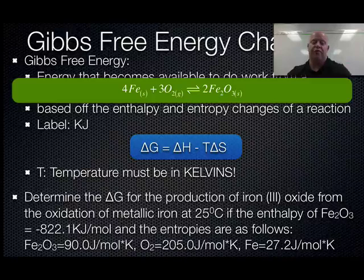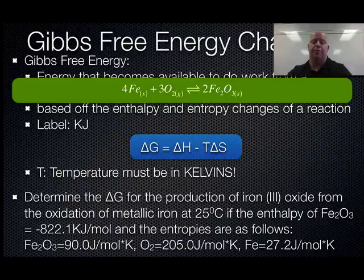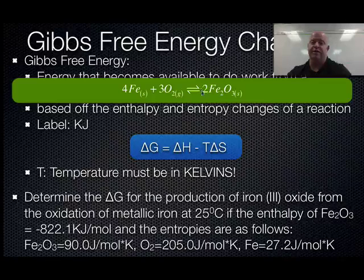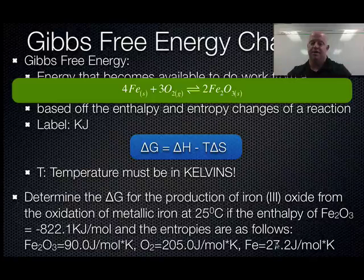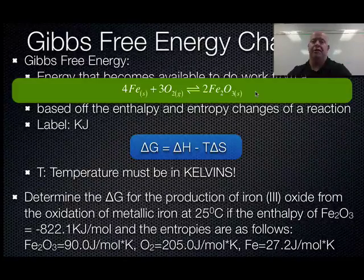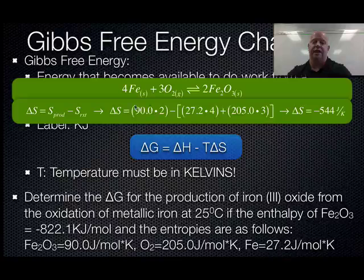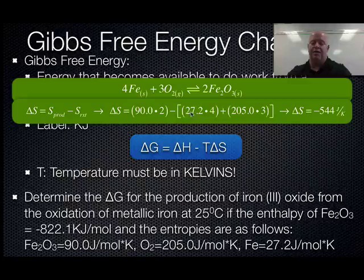The next step is to solve for our entropy, ΔS. Our equation is the sum of your products minus the sum of your reactants. Our product is iron(III) oxide with entropy value 90, so 90 times 2 gives us 180 for products. Subtract the reactants: oxygen times 3 and iron times 4.